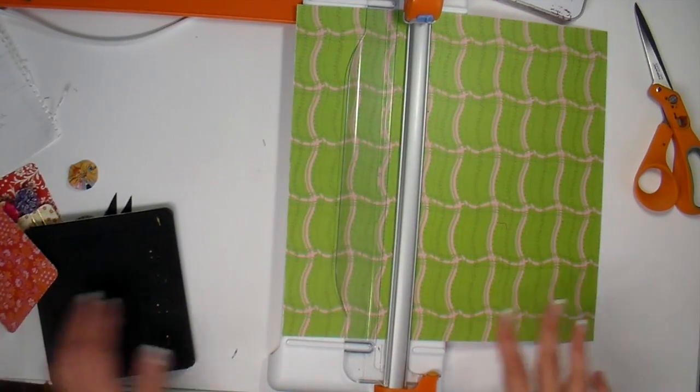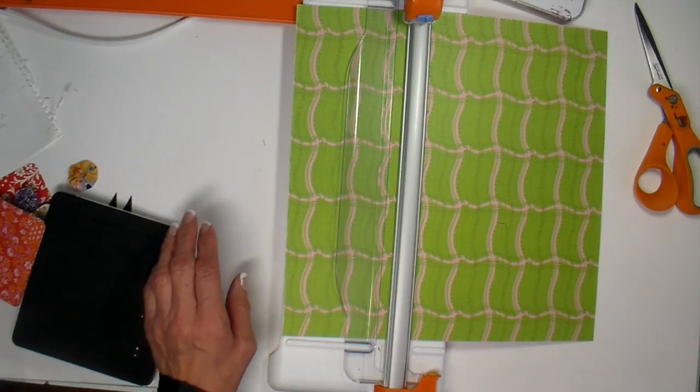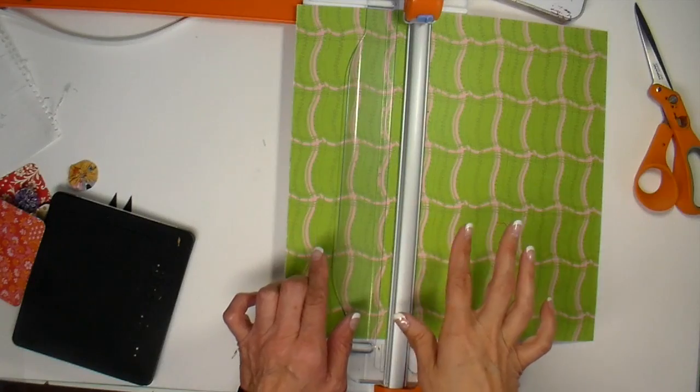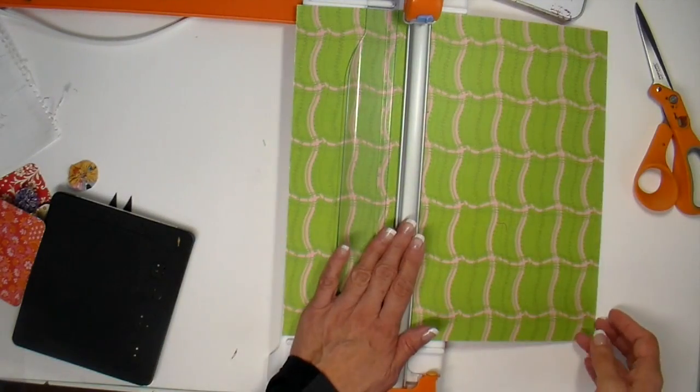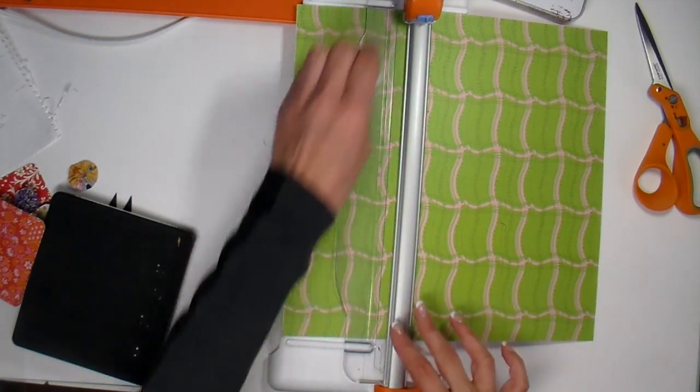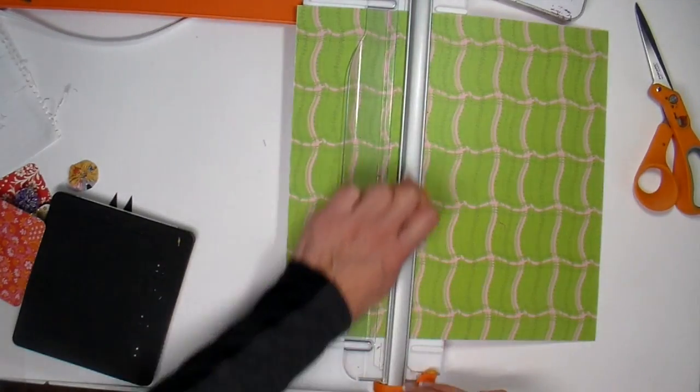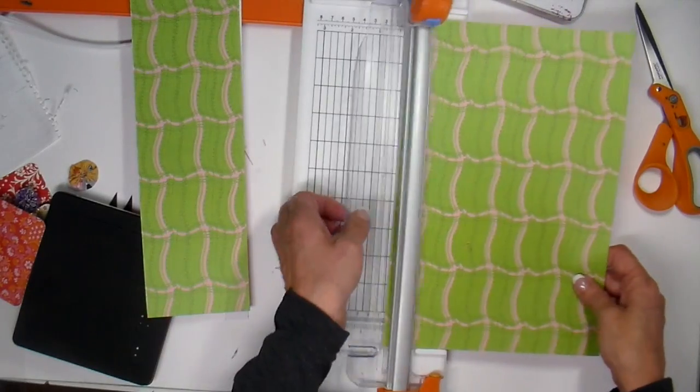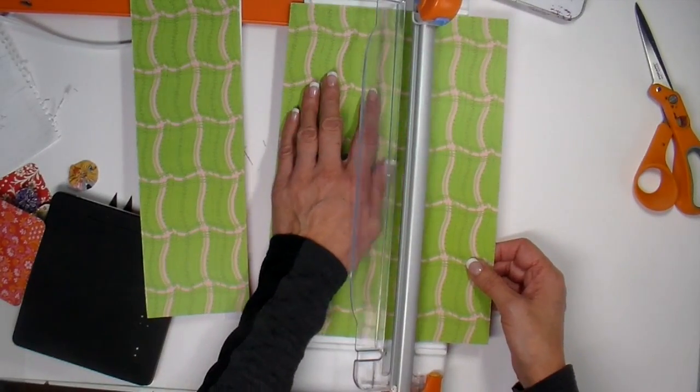I can get six cards off of each piece of double-sided 12 by 12 cardstock. I'm just going to go ahead - I'm cutting these at four inches, cutting three strips at four inches.